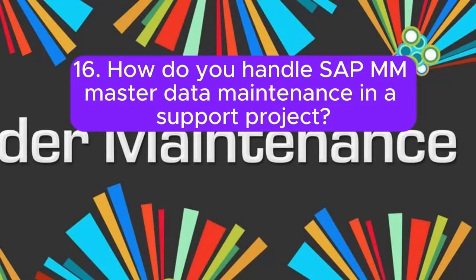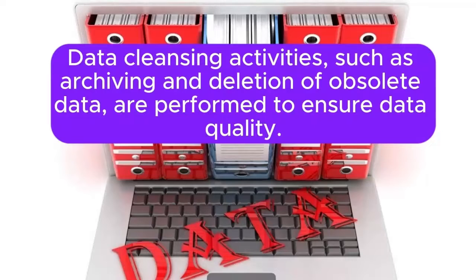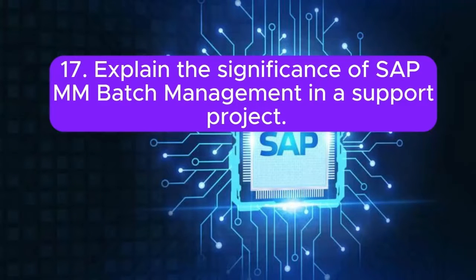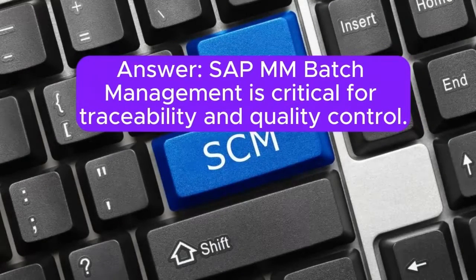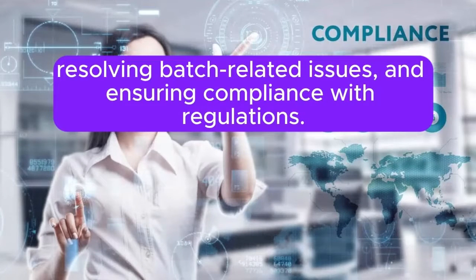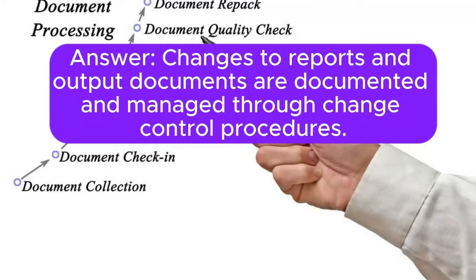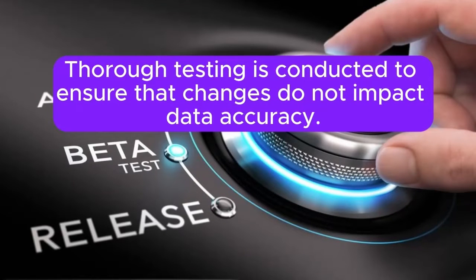Question 16: How do you handle SAP MM master data maintenance in a support project? Master data maintenance involves regular checks for accuracy and completeness. Data cleansing activities such as archiving and deletion of obsolete data are performed to ensure data quality. Question 17: Explain the significance of SAP MM batch management in a support project. SAP MM batch management is critical for traceability and quality control. Support activities involve monitoring batch-related processes, resolving batch-related issues, and ensuring compliance with regulations. Question 18: How do you manage changes to SAP MM reports and output documents in a support project? Changes to reports and output documents are documented and managed through change control procedures. Thorough testing is conducted to ensure that changes do not impact data accuracy.